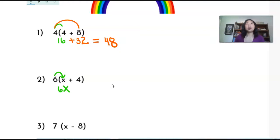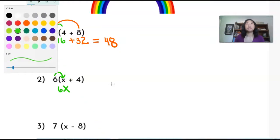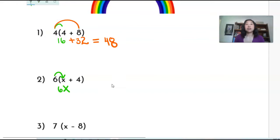And then I'm going to rainbow my second number here, which is the outside number times positive four. So six times positive four is positive 24.